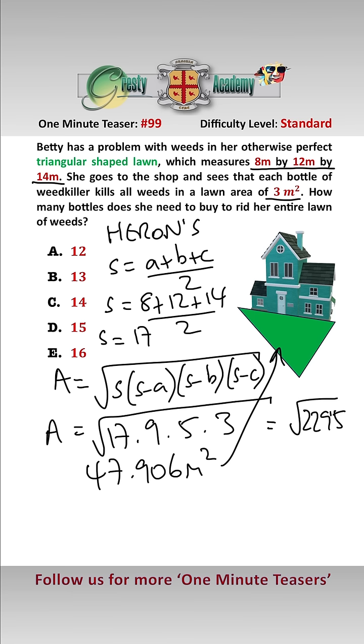Each bottle of weed killer kills weeds of 3 metres squared, so 47.906 divided by 3 gives us 15.97 bottles, and of course we need to round that up which gives us 16 bottles rounded up, which is answer E.